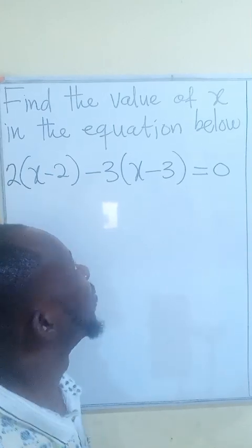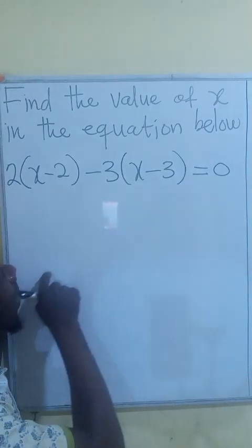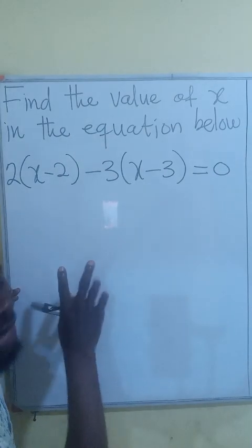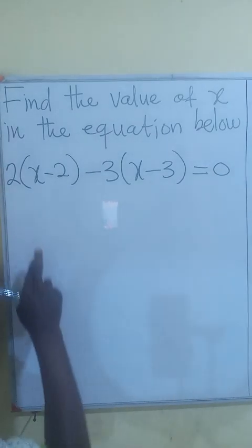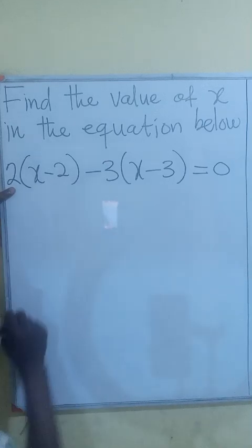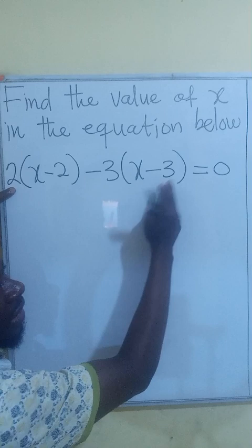Hello, let's provide answer to this question, finding the value of x in this equation. First of all, we need to expand using the term outside the bracket to multiply each of the terms inside. So the negative 3 will also multiply this and this.